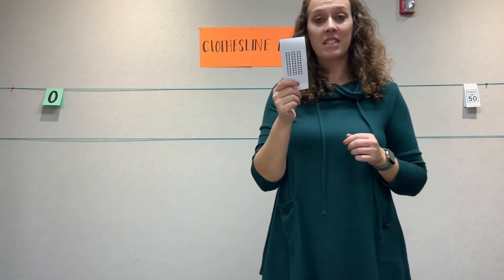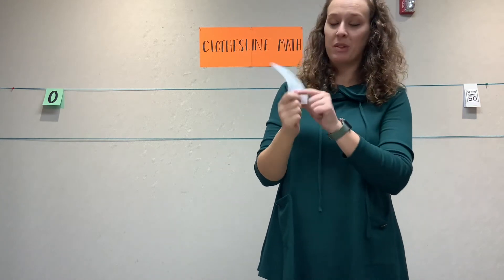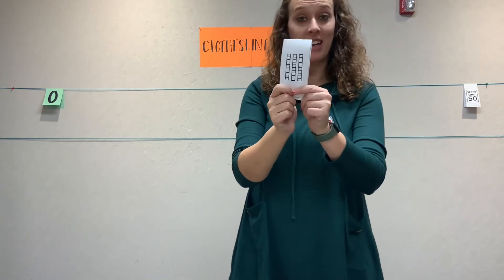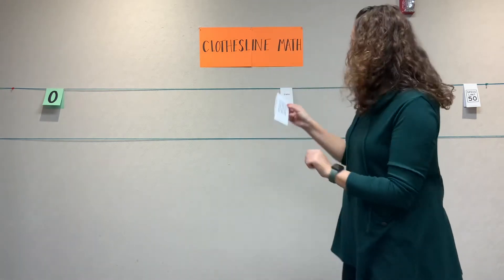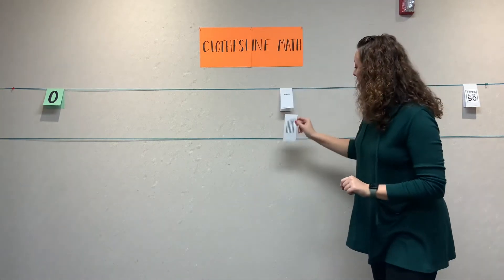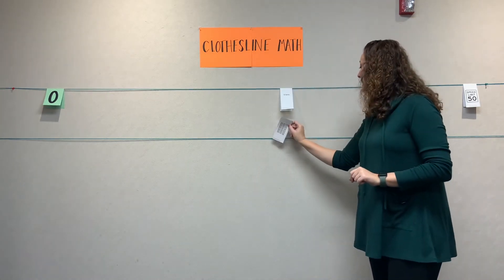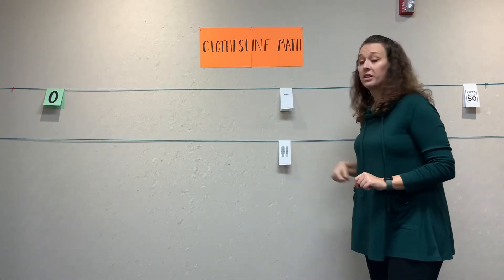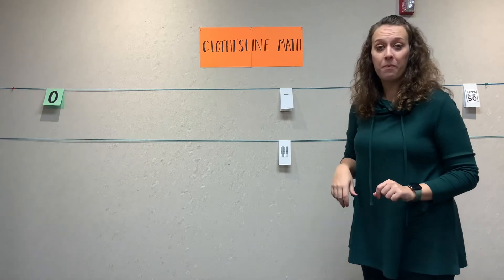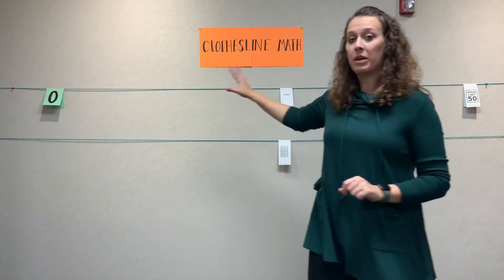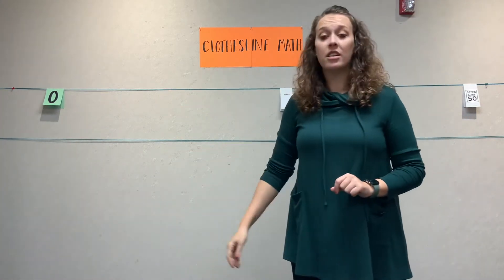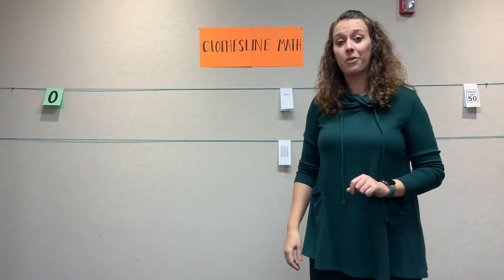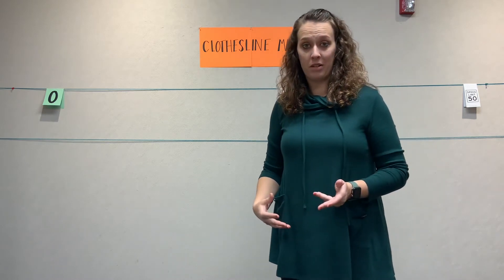We talked about different representations — what does this represent? It also represents three tens. So in a double number line, I would just put it right below. That's how I would use the clothesline math with whole numbers.